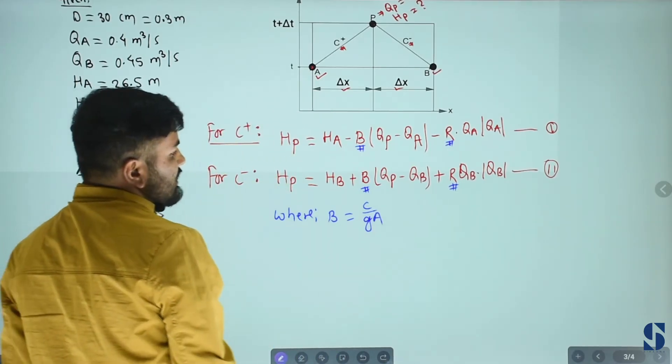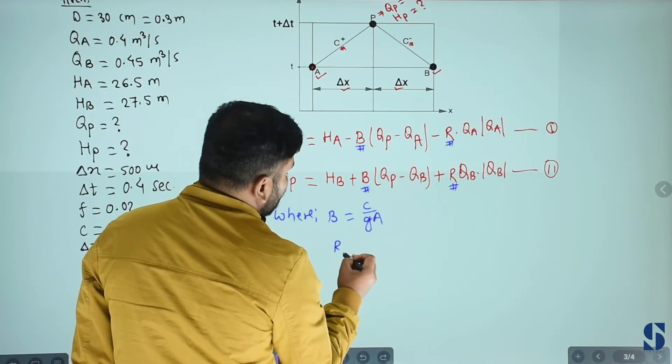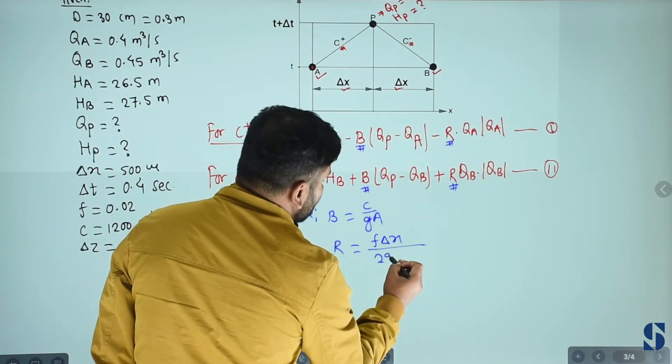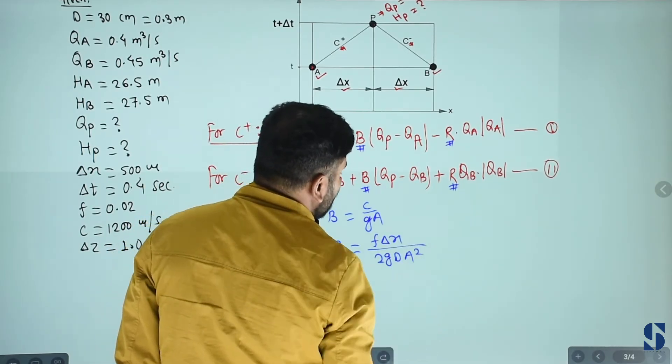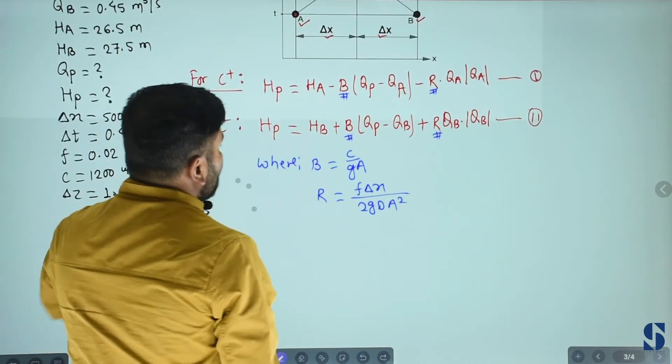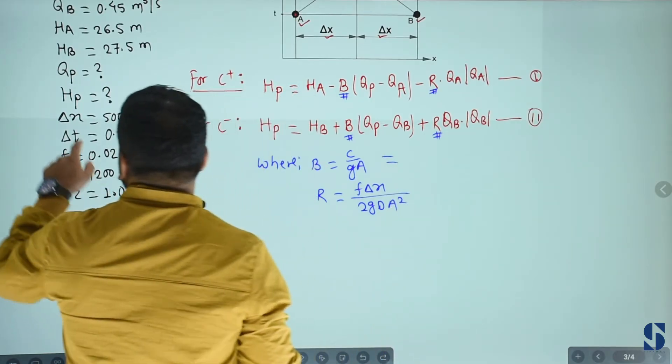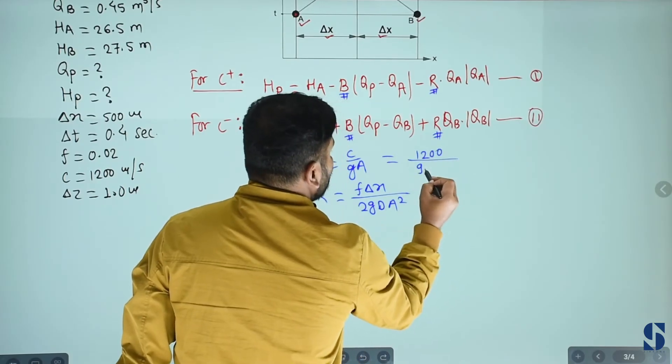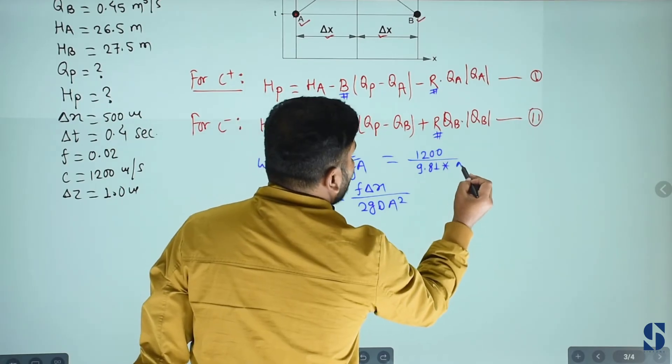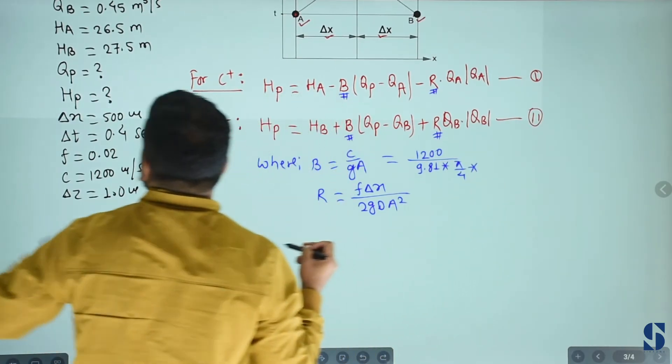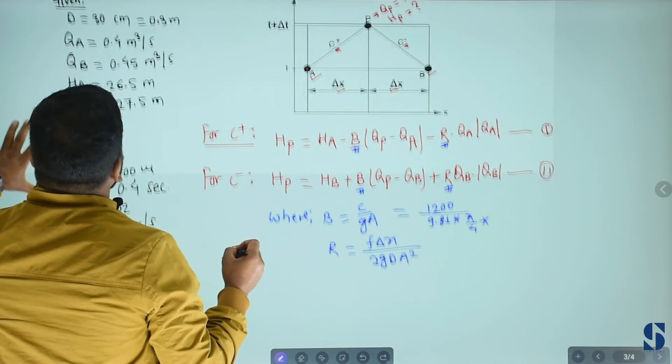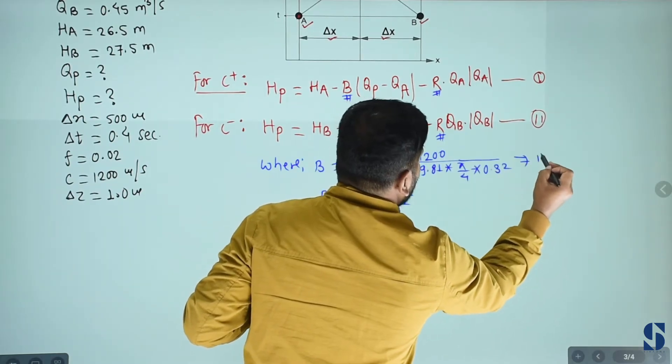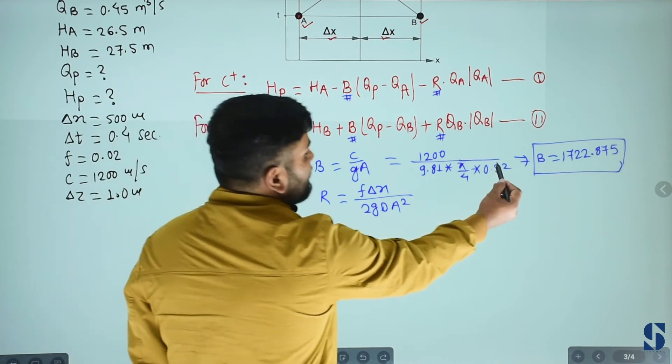B equals to C over g A, where C is celerity, g is acceleration due to gravity, A is flow area. This is celerity C 1200 divided by g 9.81 into area pi by 4 into diameter 0.3 meter squared. So B value substitute and calculate.